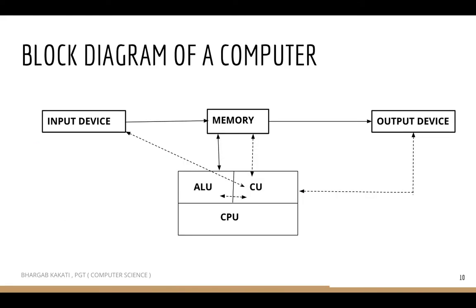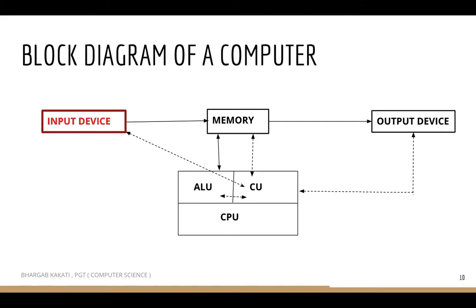Now let's look at the block diagram of a computer. People can draw it in different ways, but these components are common to all block diagrams. We have the input devices, which are used to send data to the computer. The data from the input device goes to the memory. Another main component is the CPU, which is known as the brain of the computer.